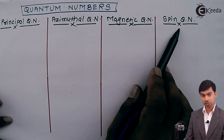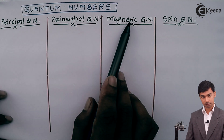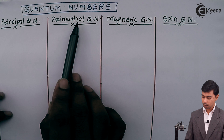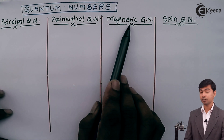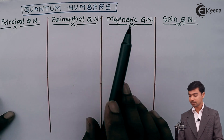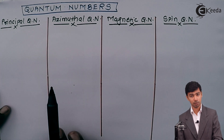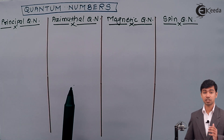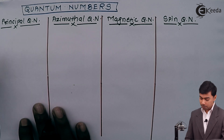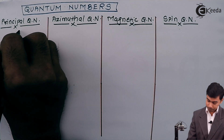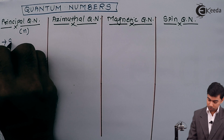There are four quantum numbers. Previously there were only three: the principal quantum number, the azimuthal quantum number, and the magnetic quantum number. But now we also have a fourth one — the spin quantum number. All four quantum numbers together give detailed information about a particular atom. The principal quantum number is denoted by small n and gives information about shells.